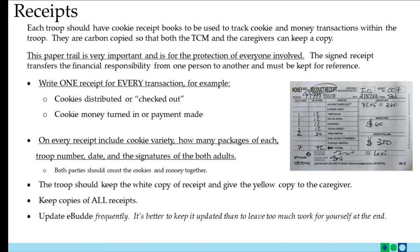The signed receipt transfers financial responsibility from one person to another and must be kept for reference. A good rule is to write one receipt for every transaction. For example, write one receipt for cookies distributed or checked out, and write a separate receipt for the cookie money turned in or payment made. On every receipt include the cookie variety, how many packages of each, the troop number, the date, and the signatures of both adults. Both parties should count the cookies and the money together. The troop should keep the white copy of the receipt and give the yellow copy to the caregiver.